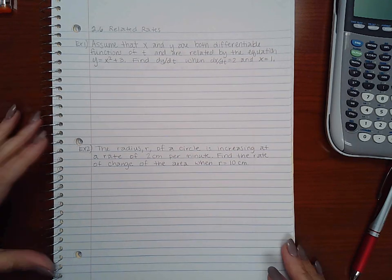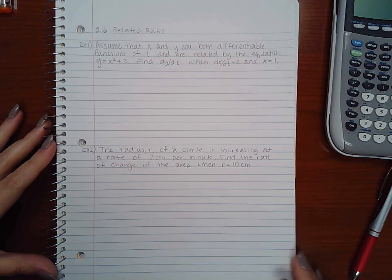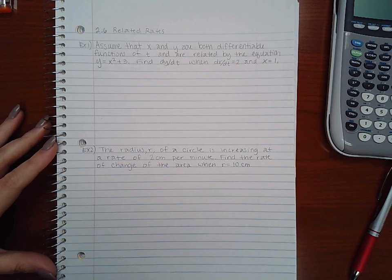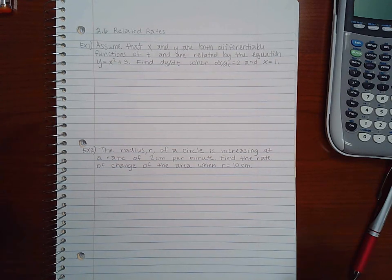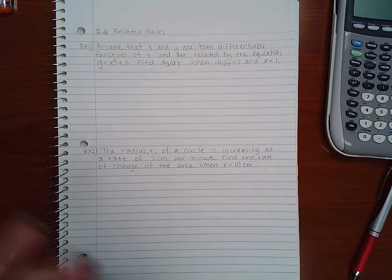Okay, this section is 2.6 related rates. Now here the best thing to do is to follow somewhat of a strategy, which is to figure out what is your primary equation.